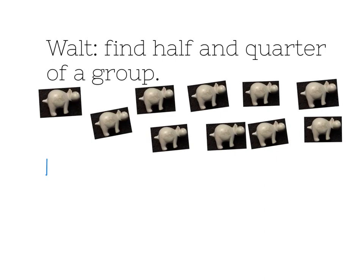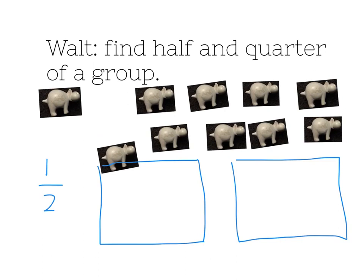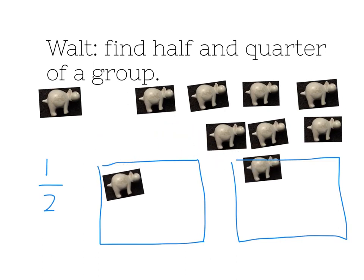If I'm splitting a group into half, the denominator tells me that I must have two even groups. So first of all, I'm going to draw my two even squares, and then pop them in like this.